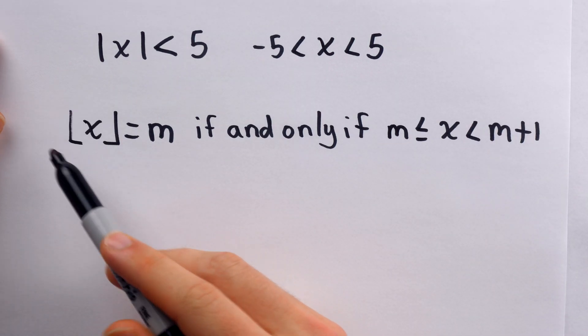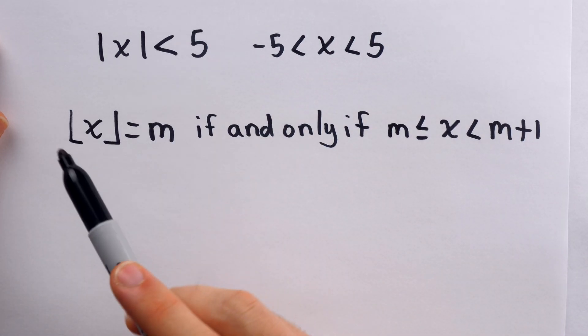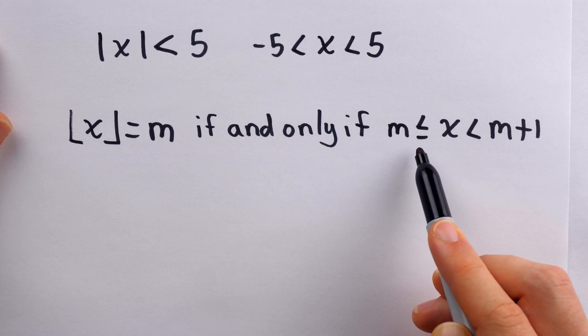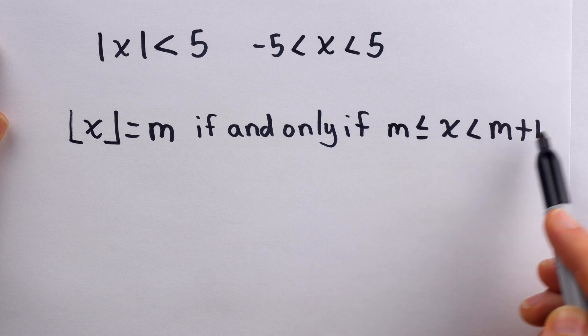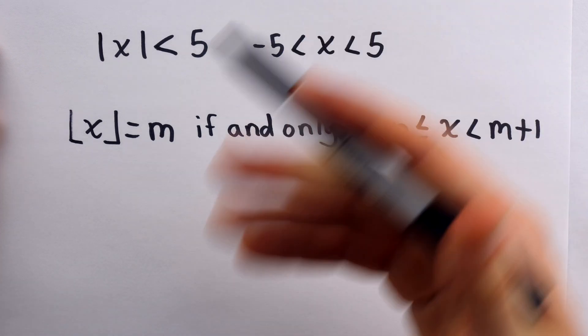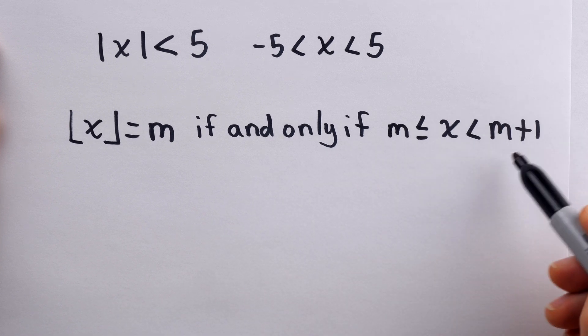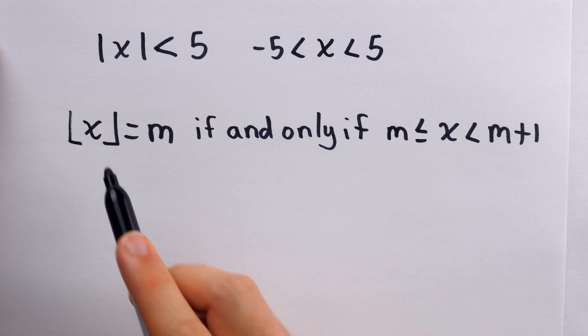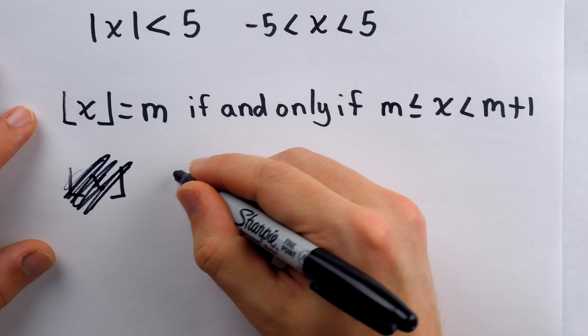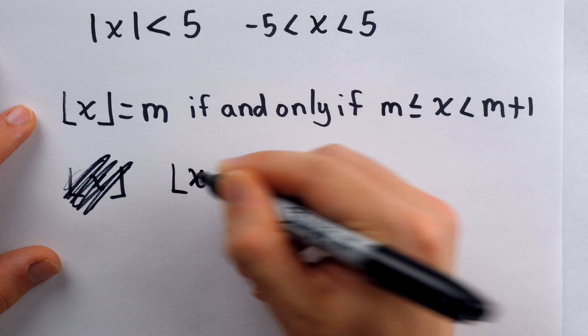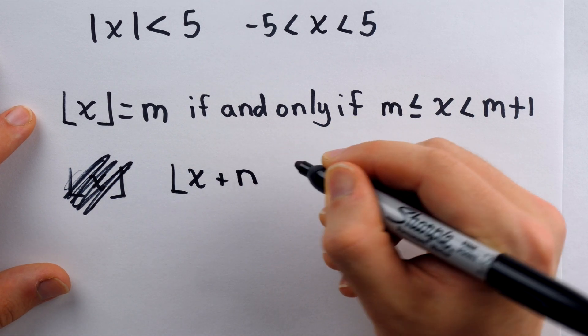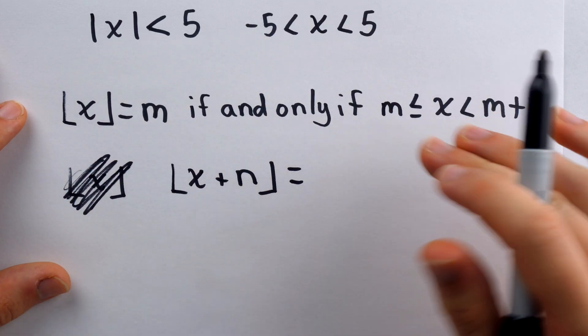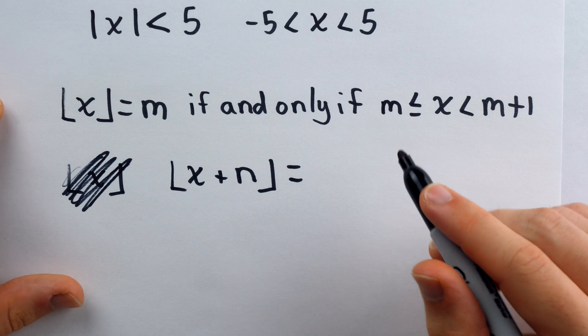So the floor of x is equal to m if and only if x is at least m and less than m plus 1. This is because the floor of x is the greatest integer that's less than or equal to x. So m would have to be an integer that's less than or equal to x. But if we add 1 to m, that would be the next integer up. And so that would no longer be less than x. Hence, it would be greater than x. So that's one way to change a floor equation into an inequality. Of course, if we have stuff in a floor function, that's a little bit trickier than not having it in a floor function.